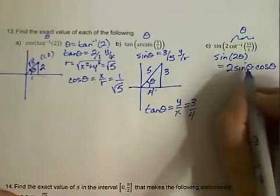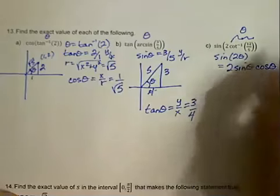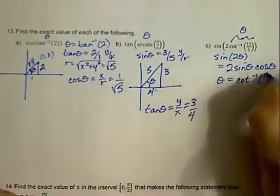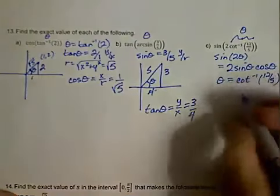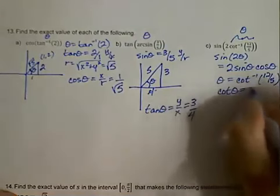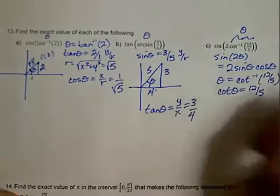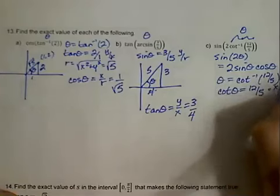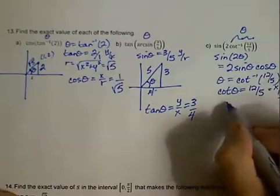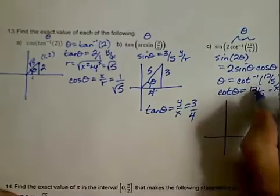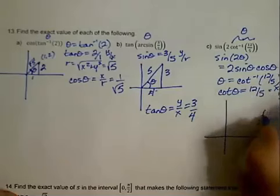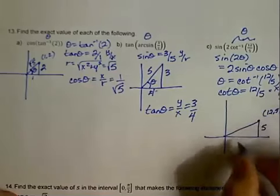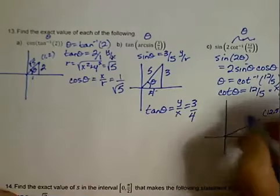To calculate this, we need both the sine of theta and the cosine of theta. Our theta equals the inverse cotangent of 12 fifths, which tells us the cotangent of theta equals 12 fifths. Since cotangent is the reciprocal of tangent, that's x over y. So we make our x equal to 12 and our y equal to 5, giving us the point (12, 5). This side is 5, this side is 12, and r turns out to be 13.